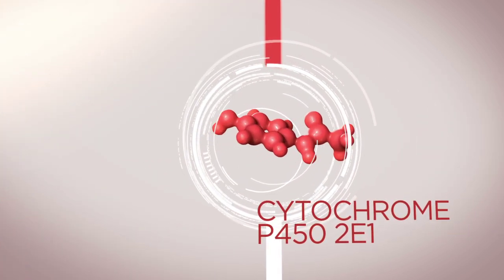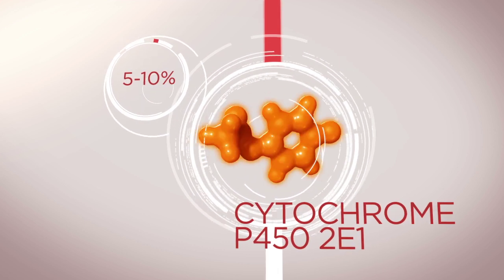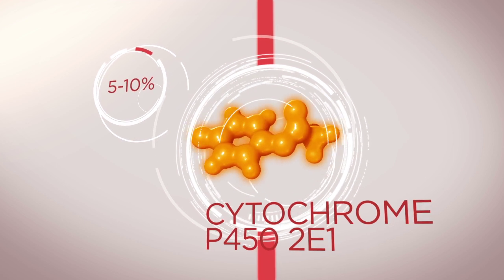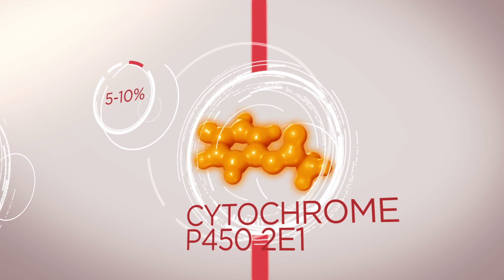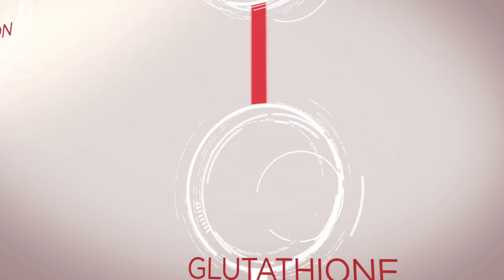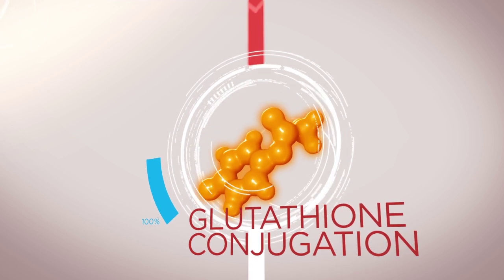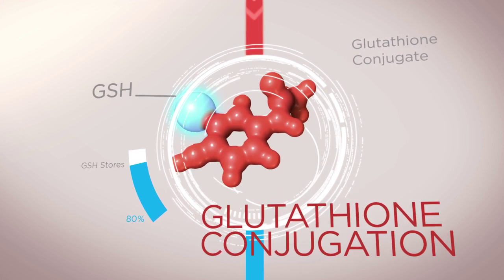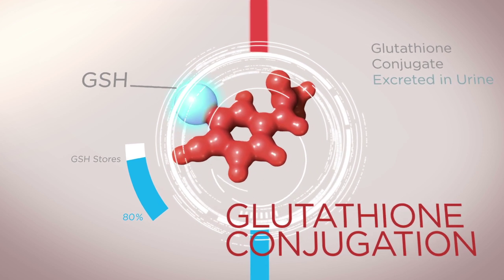Only a small proportion of acetaminophen, about 5 to 10 percent, is metabolized through the cytochrome P450 2E1 pathway. Here, acetaminophen is oxidized to form the reactive intermediate metabolite NAPQI. NAPQI in turn conjugates with glutathione, also known as GSH, to produce non-toxic mercapturic acid and cysteine metabolites, which are excreted in the urine.